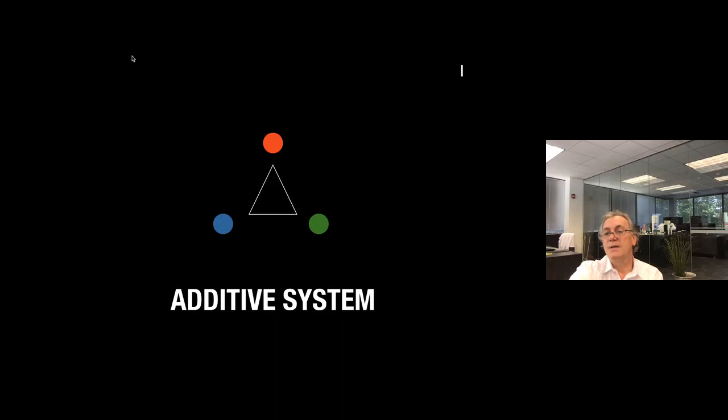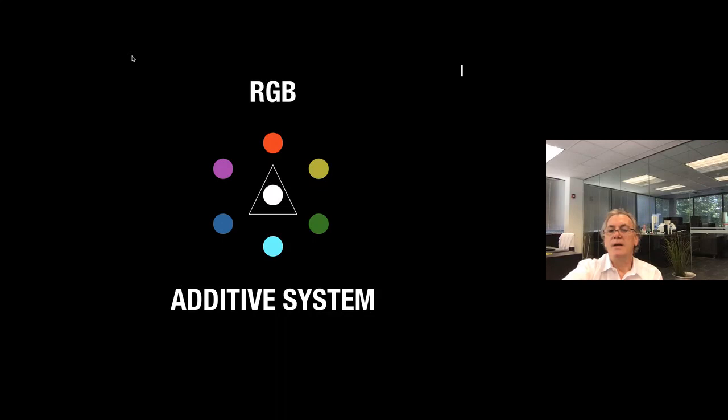And it's from these primaries that mixing them together, we will get the secondary. So mixing red and green together, we will get yellow. And mixing blue and green together, we will get cyan. And mixing blue and red together, we will get what is known as magenta. All these colors mixed together lead us to white.